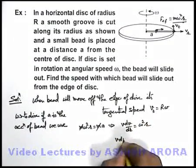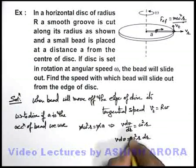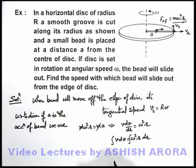Or we can write v dv is equal to omega square r dr. Now if we integrate this expression such that initially the bead starts from r equal to a when its speed was zero.